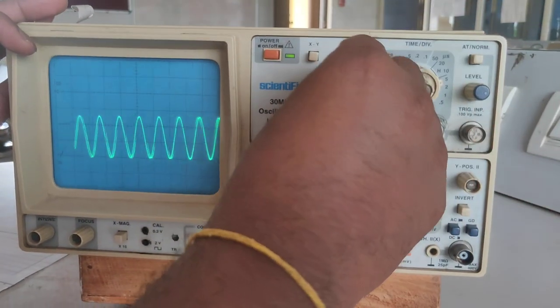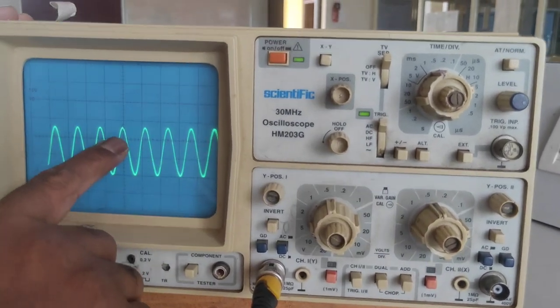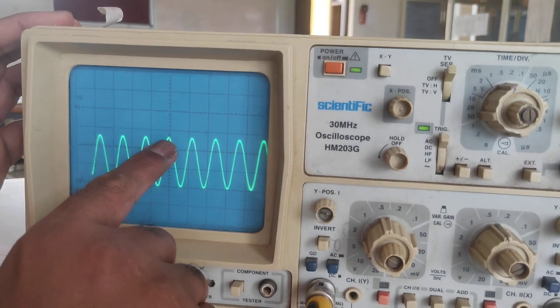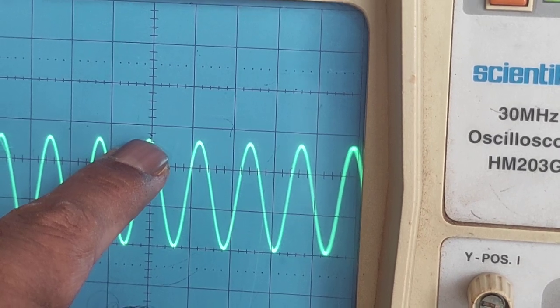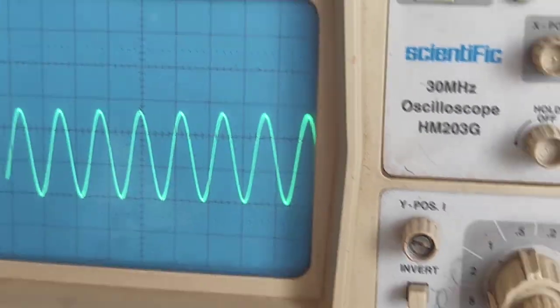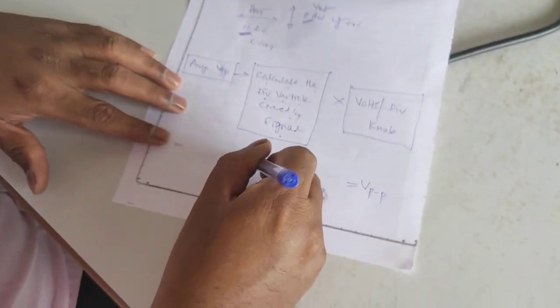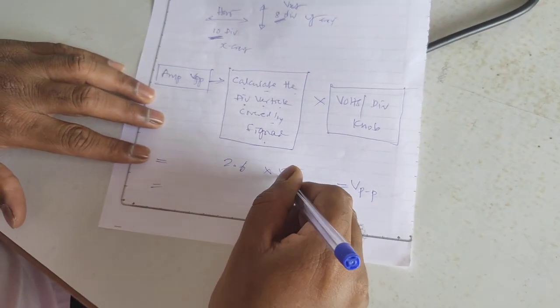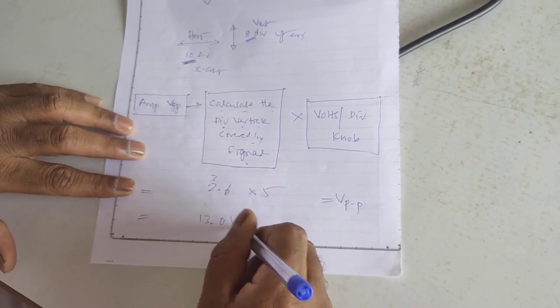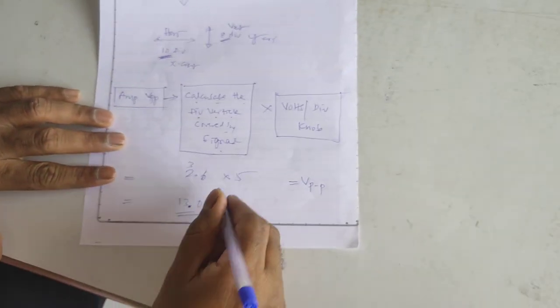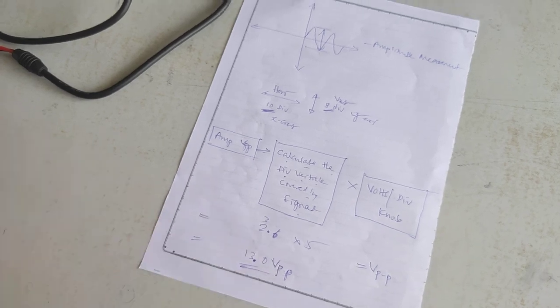Signal covered how many divisions? 1, 2. The subdivision is 0.2, 0.4, 0.6. So what is the value now? 1, 2, 2.6 into 5. You can calculate here. What is our value? Signal covered is 2.6 divisions, and the volts per division is 5. 13 volts peak to peak you are getting. 2.6 divisions times 5 equals 13 volts peak to peak. This is how you have to do voltage measurement. It is very simple how to measure voltage.